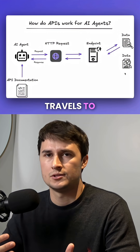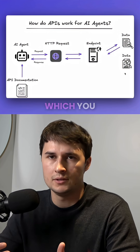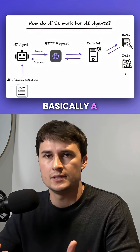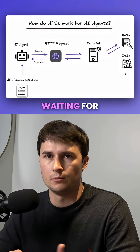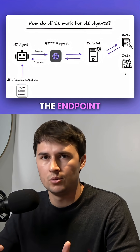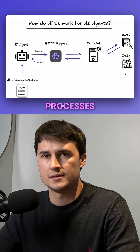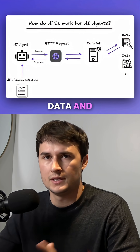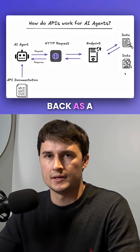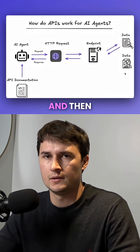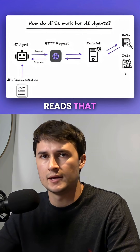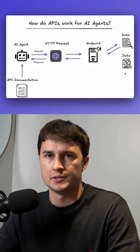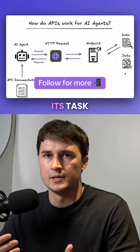That request travels to an endpoint — which you can think of as the kitchen — basically a digital server waiting for instructions. The endpoint then processes the request, retrieves the relevant data, and sends it back as a response. Finally, the AI agent reads that response and uses the information to perform its task.